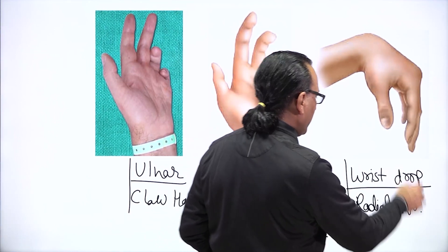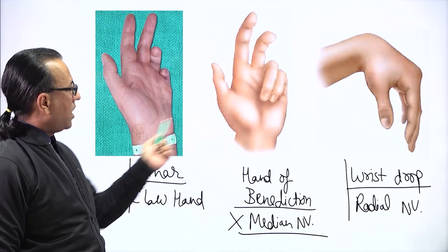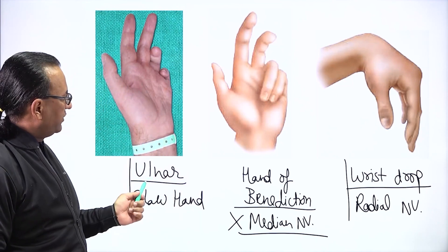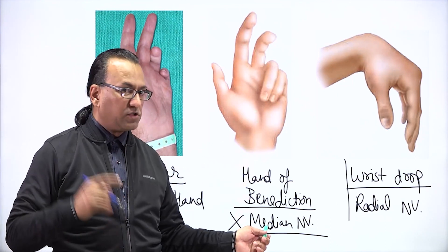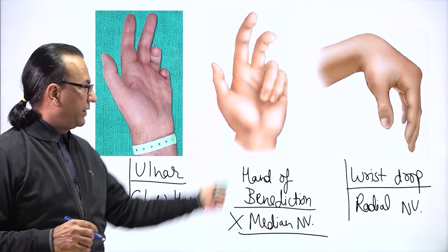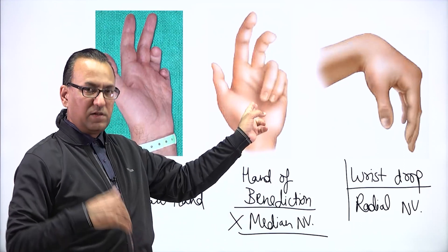But then there can be some confusion. Like here we are looking at these two diagrams, they are appearing the same, almost the same. How do you know this is ulnar nerve injury and this is median nerve injury? Because you have to understand for this kind of presentation, you have to tell the patient to make a fist, and then this deformity will appear.